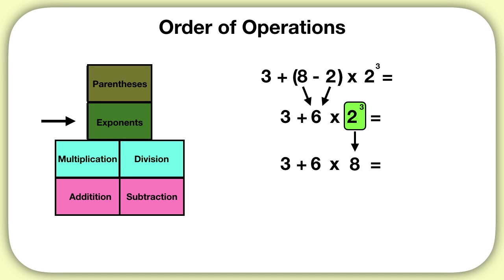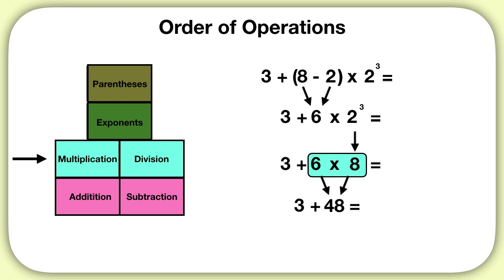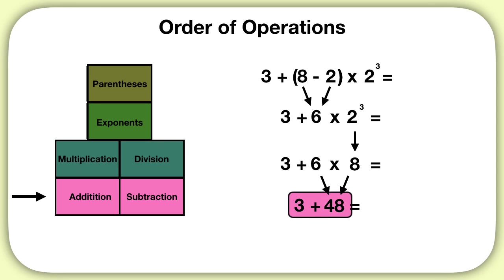There are no more exponents — solve the rest of this on your own. What is the solution to this equation? Next, do multiplication and division. So multiply six times eight, which is forty-eight. Then for the last step, there's no more multiplication or division, so we add. Three plus forty-eight gives a final answer of fifty-one.